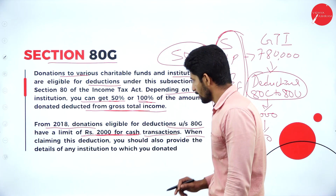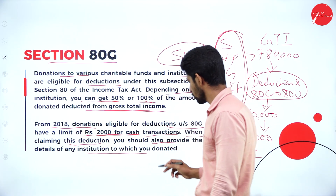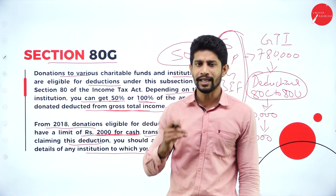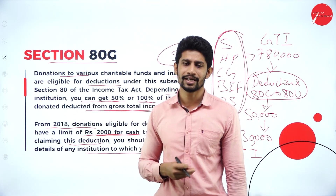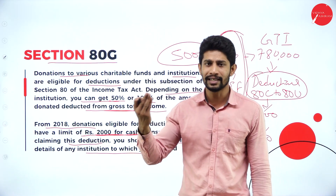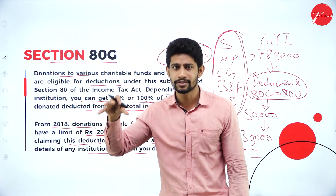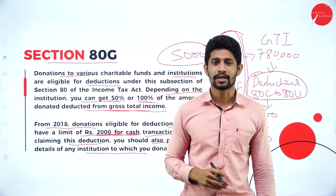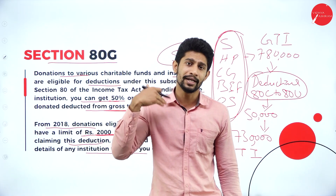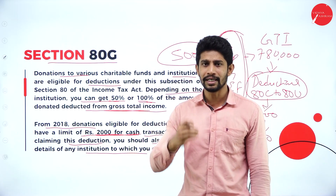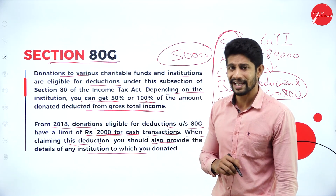When claiming this deduction, you should also provide the details of the institution to which you donated. If you want to claim the deduction for a donation given to some institution or charitable trust at the time of filing the income tax return, you are supposed to give the details of which particular institution or charitable trust you donated to, and whether you paid online, by cheque, or in cash — each detail must be submitted to claim the deduction under Section 80G.